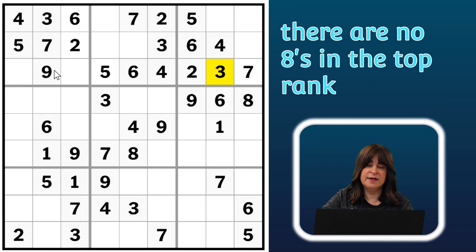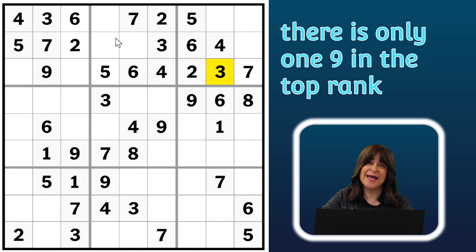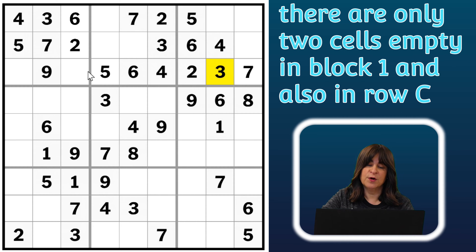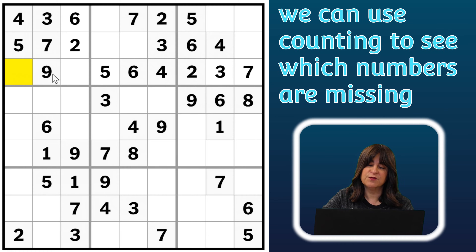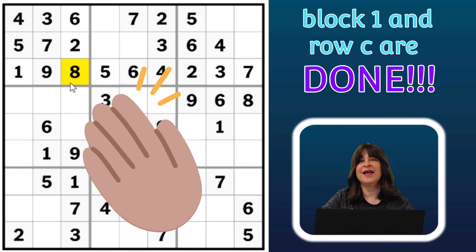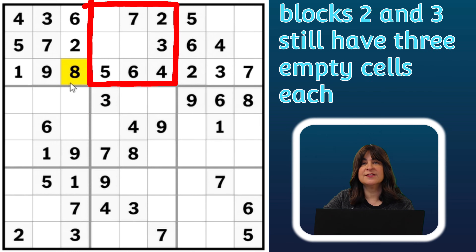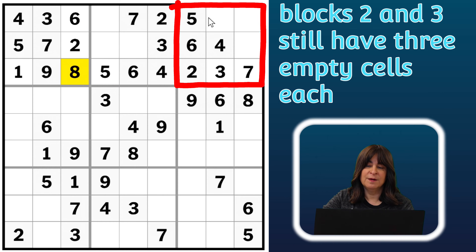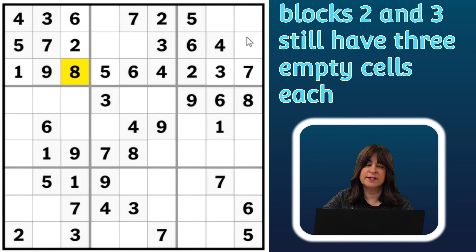There are no eights. What about nine? There's only one nine, so it's hard to place that just yet. Looking at this third row, I see there are only two cells remaining, and they're both in the same block. So I can use counting to figure out which two numbers are missing and fill them in as candidates using Snyder notation. The missing numbers are one — but wait, there's also a one in this column, so this has to be the one. And then the other missing number is eight. Now the row is done, and so is block one. There are now three cells empty in blocks two and three, but since it's three cells, Snyder notation only applies when two cells are missing, so I'll leave those alone for now.